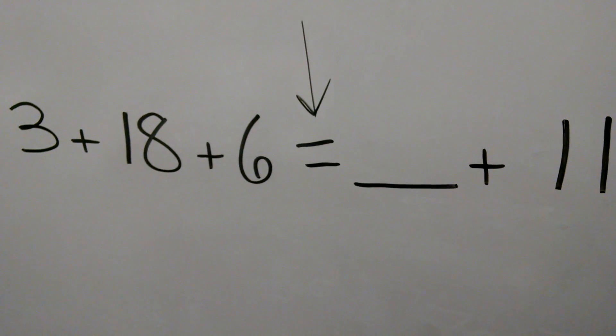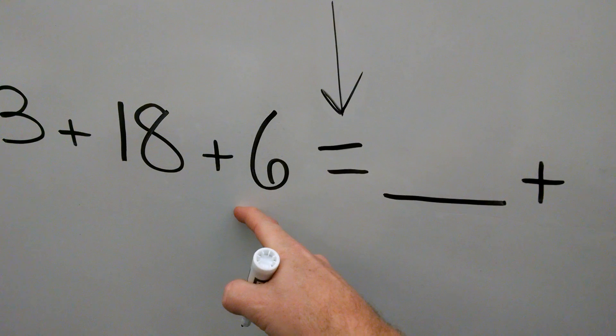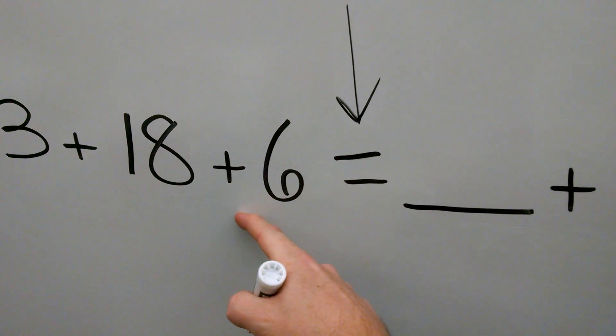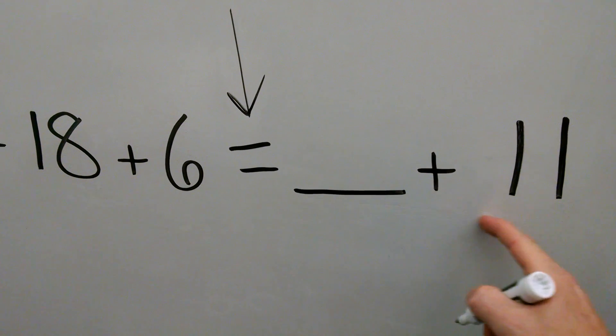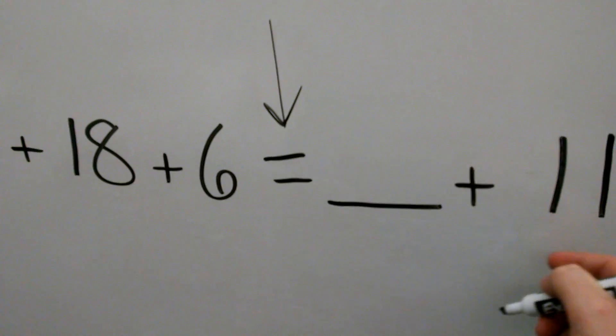Which side can we solve? Well, we can solve this side because all of the information is there. Over here, we don't have all the information. We just have a blank and the 11.